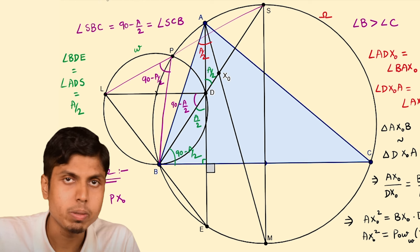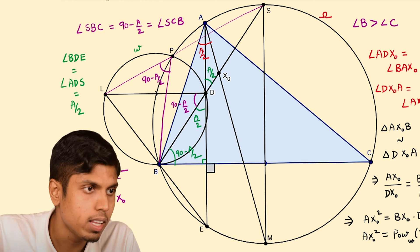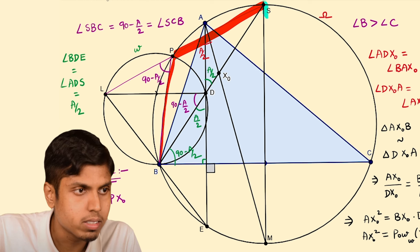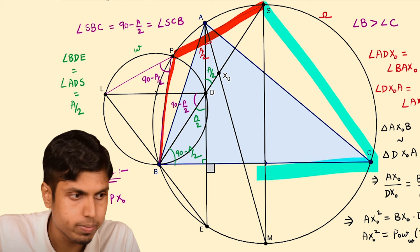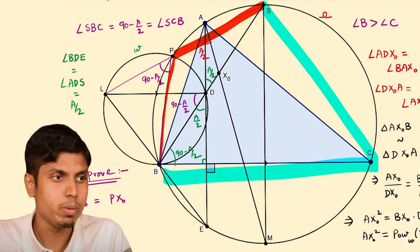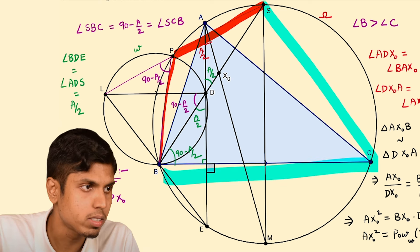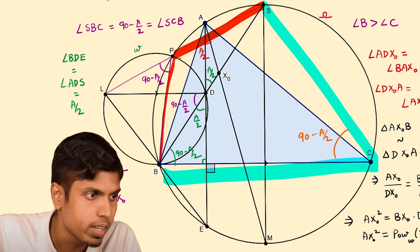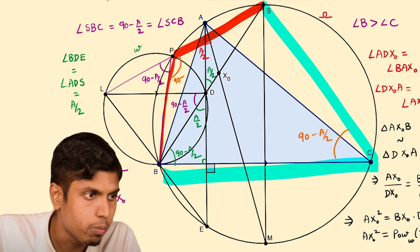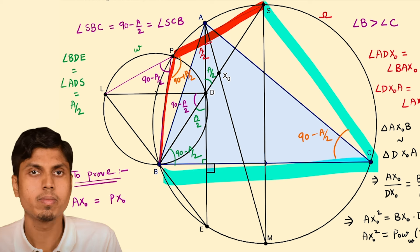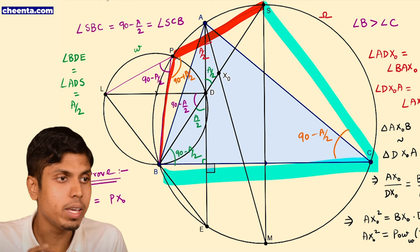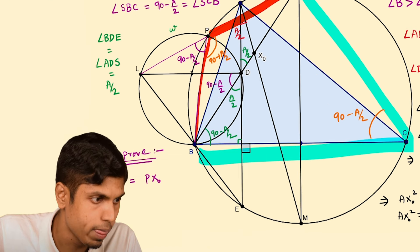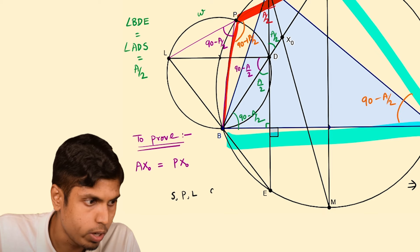Let's find angle SPB. Joining P to S, angle SPB equals 180 minus angle SCB. Since angle SCB equals 90 minus A/2, angle SPB equals 90 plus A/2. Hence angle LPS equals 180 degrees, which means points S, P, and L are collinear.